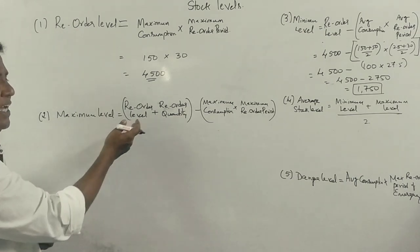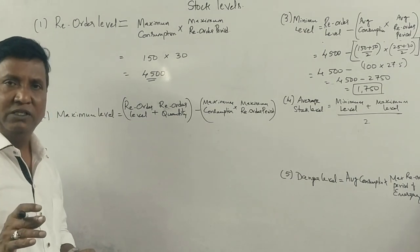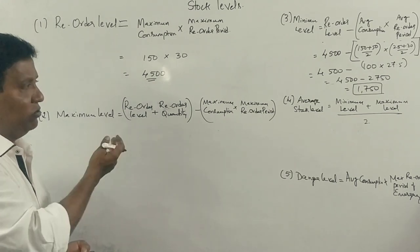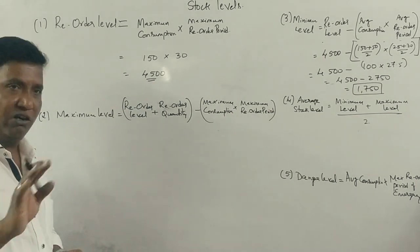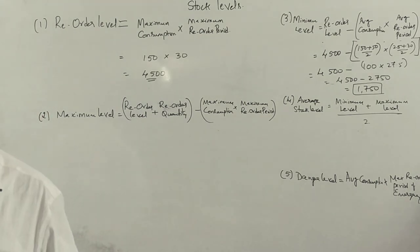You can also do maximum here, maximum. Why is there no reorder quantity given? Reorder quantity, average is not needed. That's the information provided.